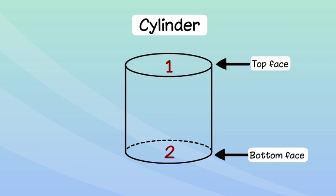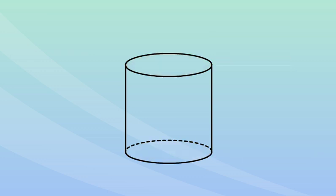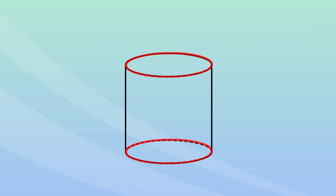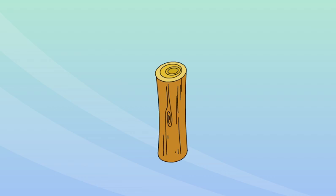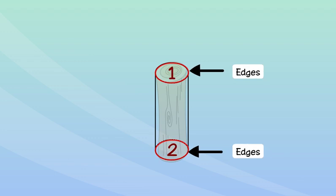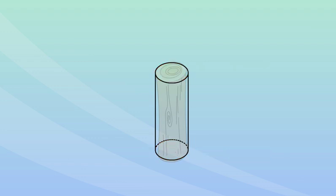A cylinder has two faces, one on top and other at the bottom, two edges and no vertex. Let's look at the log of wood again. It has two faces, two edges and no vertex.